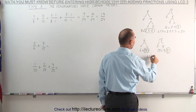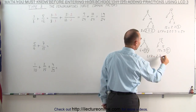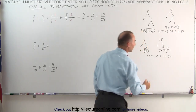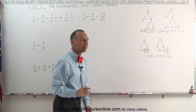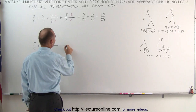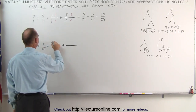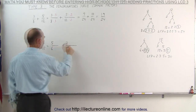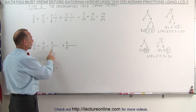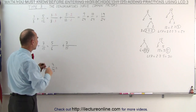Now let's circle the prime factors which occur the most. Here we have the number 2, here we have the number 3 — it also occurs once in the other factorization, but we only have to circle it once. And here we have the number 5, which means that the lowest common denominator is simply the product of all the factors we circled: 2 times 3 times 5, which is 30.